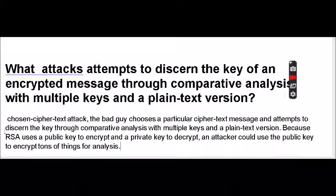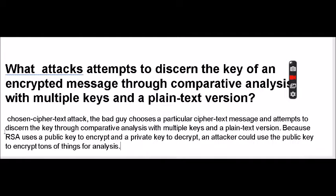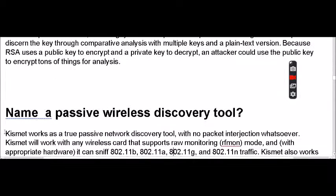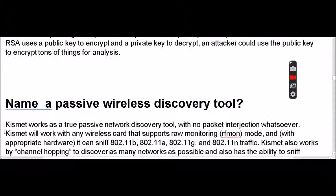The bad guy chooses a particular ciphertext message and attempts to discern the key through a comparative analysis with multiple keys in a plain text version. Because RSA uses a public key to encrypt and a private key to decrypt, the attacker could use the public key to encrypt many things for analysis. Name a passive wireless discovery tool — Kismet is one.